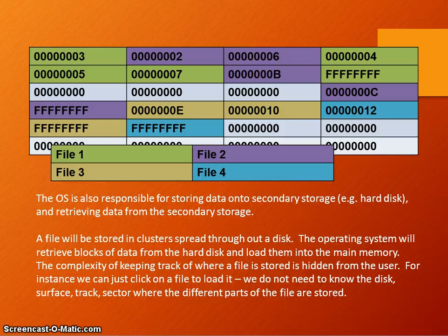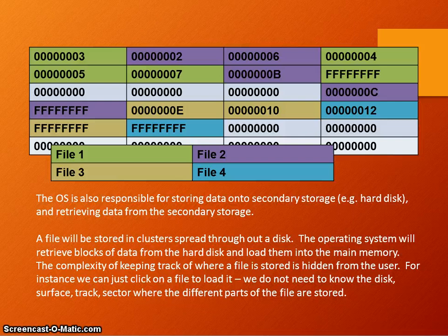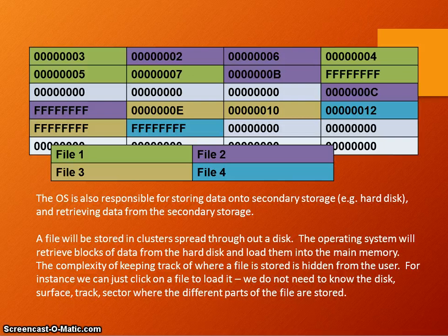Another responsibility is storing data on a hard disk drive or secondary storage, such as a flash memory stick or SD card. A file will be stored in clusters spread throughout the disk. The operating system retrieves blocks of data from the hard disk and loads them into main memory. The complexity of tracking where a file is stored is hidden from the user — when you save a file, you do not need to know what sector, track, or surface it will be stored on. That complexity is managed by the operating system.